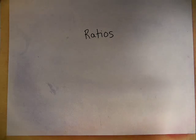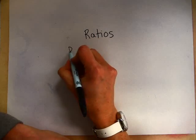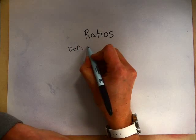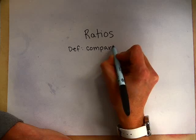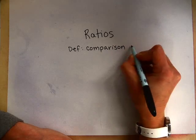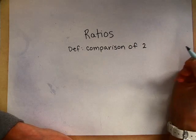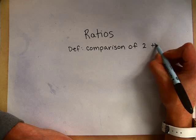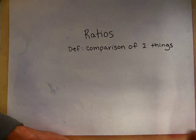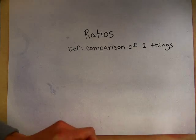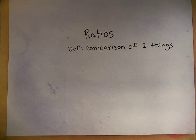The definition of a ratio is it is a comparison of two things. Now, to me, that doesn't really make sense until you actually see a couple ratios. So let me give you an example.